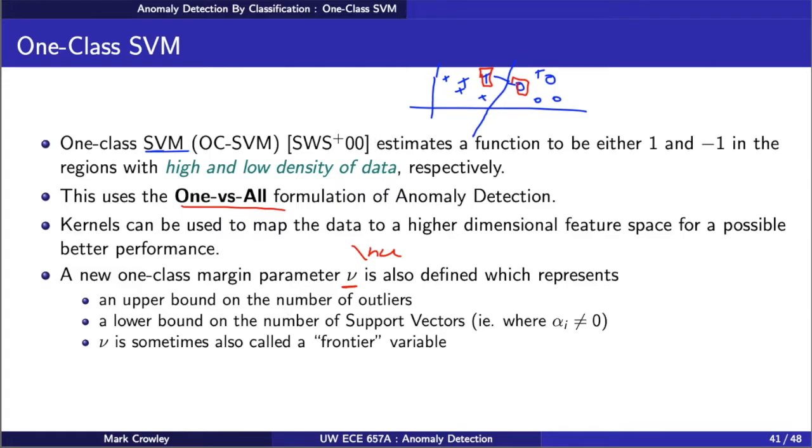It's an estimate of the number of outliers you're going to detect and basically claim are in the data, but it's also a lower bound on the number of support vectors. So if you set nu to some number, then you're basically insisting to the algorithm that it must have at least that many support vectors. If it's five, it's going to try and use five points as its anchors and have five of the alphas not be zero in the optimization. But it will also try to limit itself to five points being outliers.